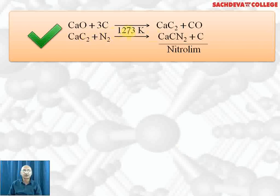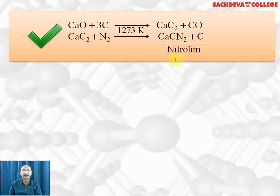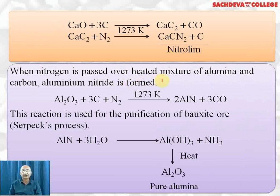Calcium oxide when heated with carbon or coke gives calcium carbide plus carbon monoxide. Calcium carbide reacted with nitrogen at 1273 Kelvin gives calcium cyanamide plus coke — this is called nitrolim. It is used as a fertilizer because calcium cyanamide on hydrolysis gives calcium carbonate and ammonia.